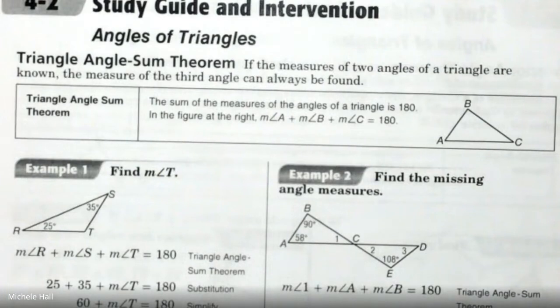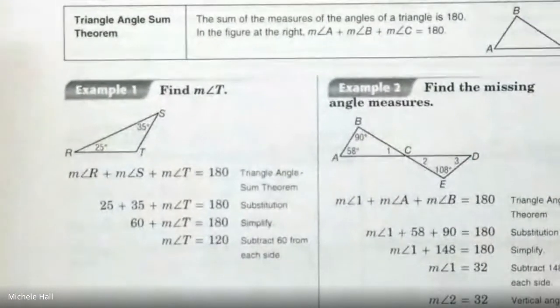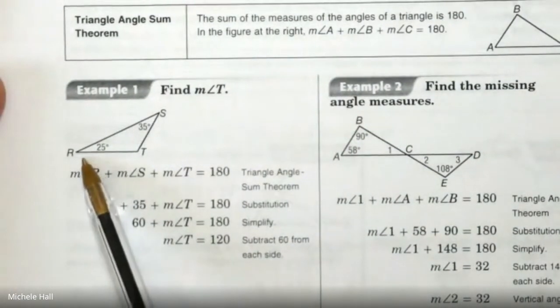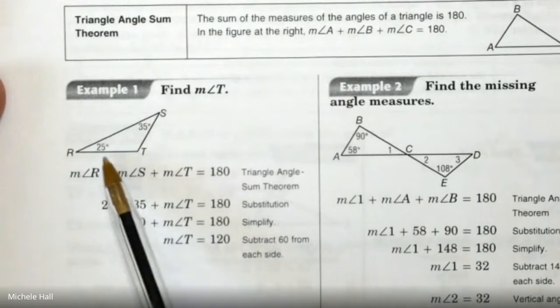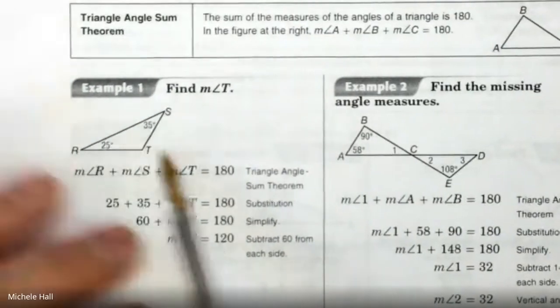Let's take a look at the first example so that we know how to do examples 1 through 6. Let's try to discover what they did. They have triangle RST, and they have two acute angles in them.